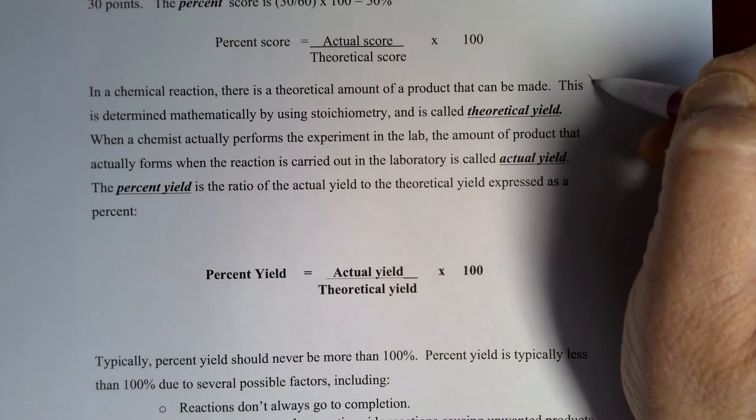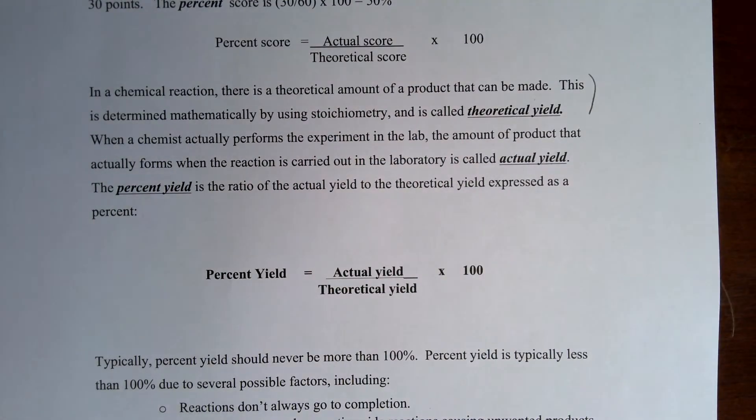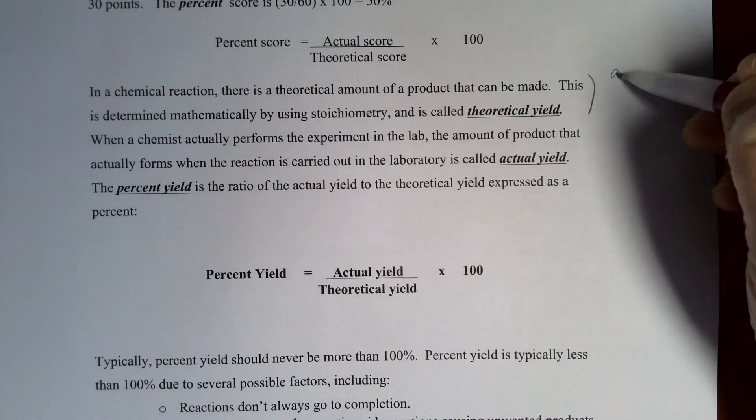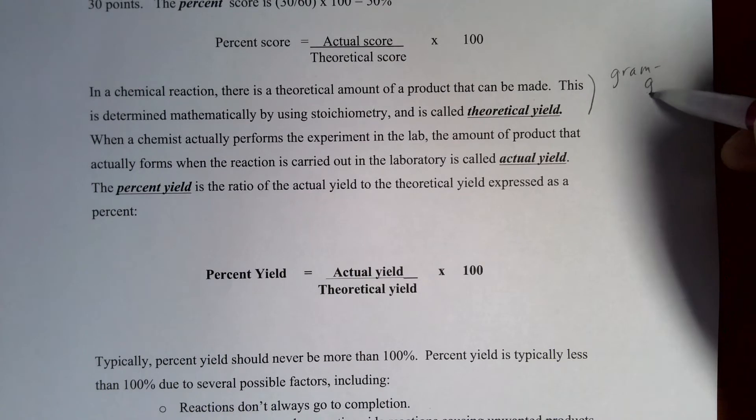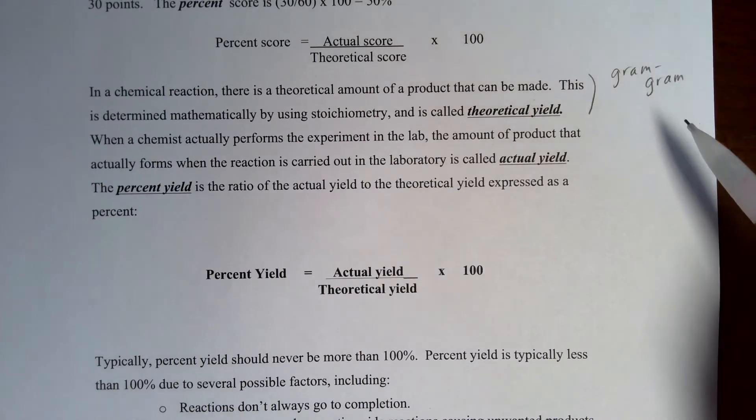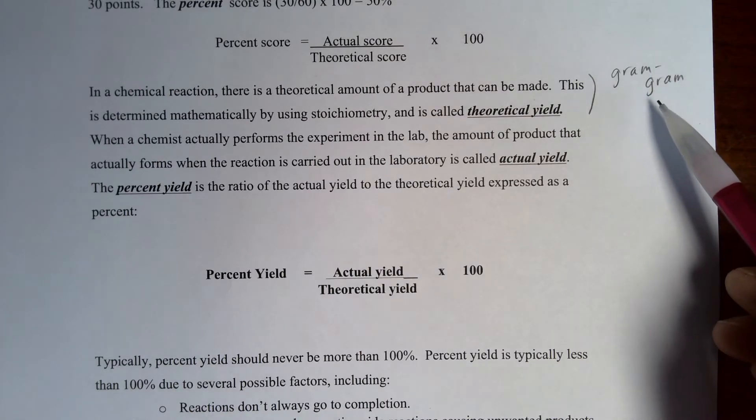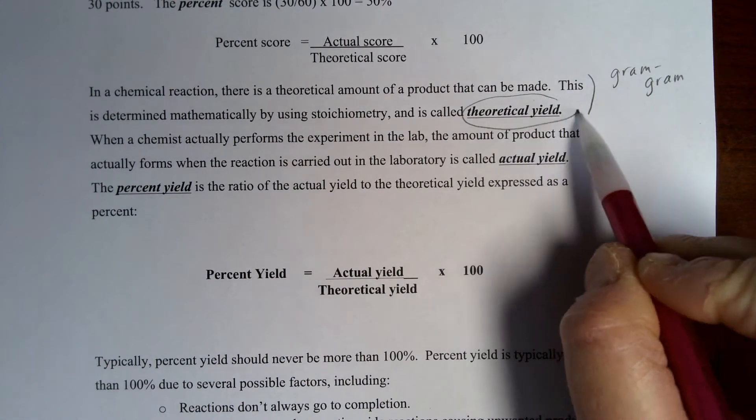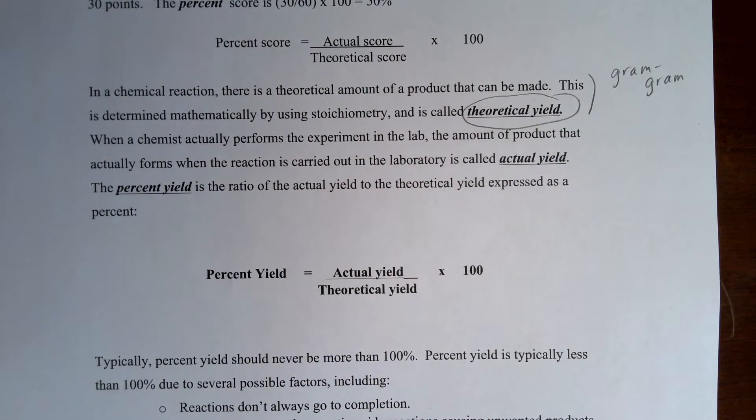So this is an important piece so far that the gram to gram stoichiometry that we've been working on, the answer to that problem is called the theoretical yield. So the theoretical yield is what the math of the chemical equation predicts you can make.